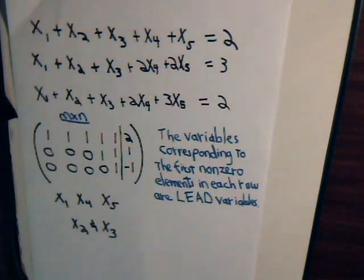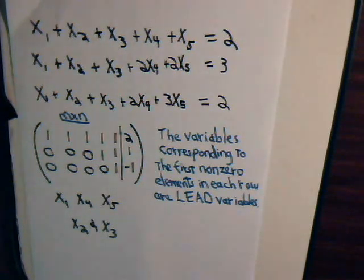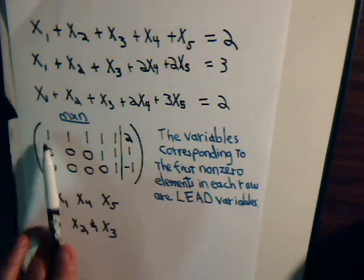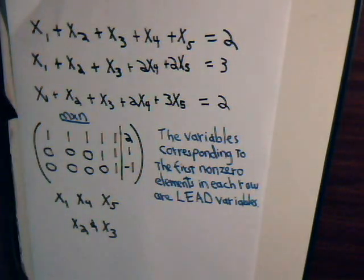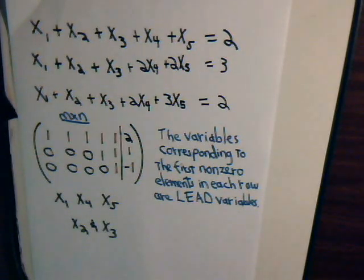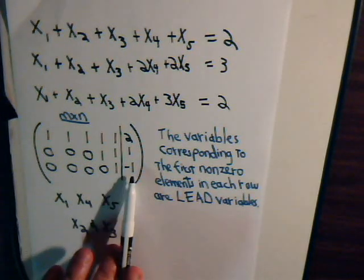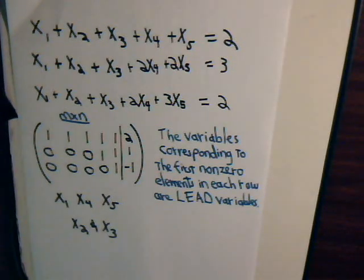So you're going to have an infinite number of solutions or no solution at all. This is with an underdetermined system. What happens if we have a matrix like we had in our very first video, where we had three equations and three unknowns — a square matrix? Here we had an m by n matrix, where m is the number of rows, n is the number of columns, and there are more columns than there are rows. Therefore, there are going to be some free variables, giving an infinite number of solutions, or a row of zeros with a non-zero element and no solution.